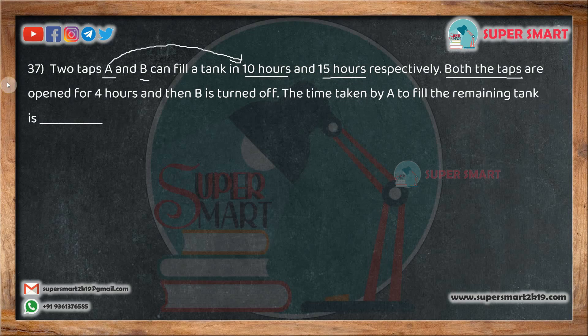Now, what do you do? Both the taps are opened for 4 hours and then B is turned off. If Tap A can do the work in one hour, it is 1 by 10. If Tap B can do the work in one hour, it is 1 by 15.